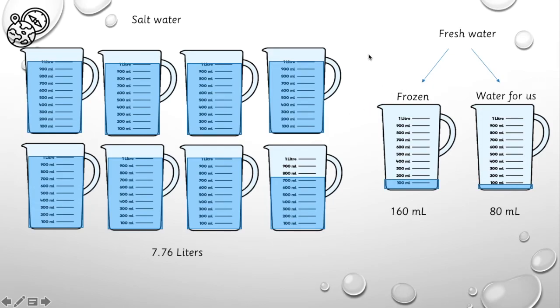Now, after that, we will separate 80 milliliters of that 240 milliliters of fresh water into water for us. That means, of all the water on the earth, 7.76 liters are salt water, which we cannot drink. 240 milliliters are fresh water, but of that, 160 milliliters are frozen. That means they are frozen in glaciers and ice caps and snows, and we cannot access it. So, of that 8 liters, the equivalent of 80 milliliters is water for us.